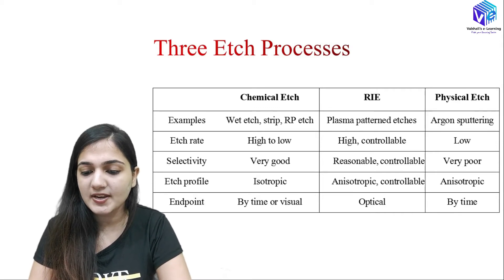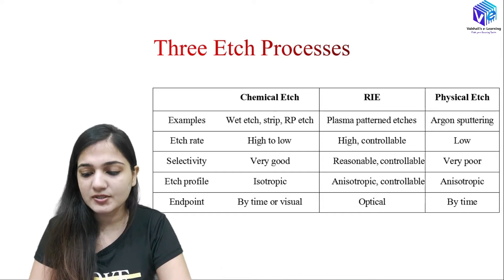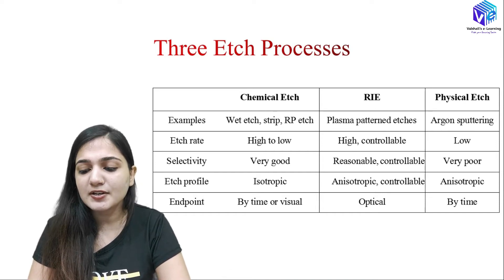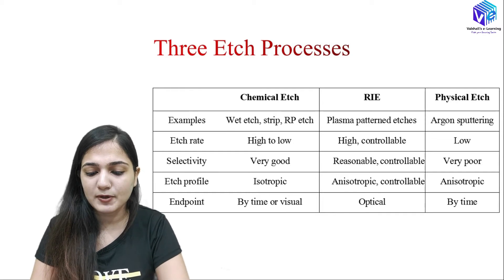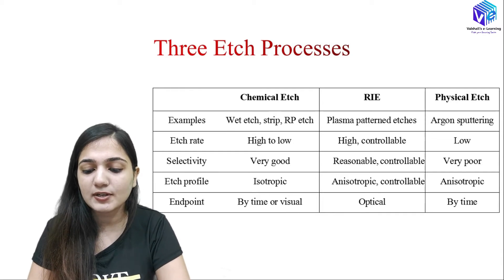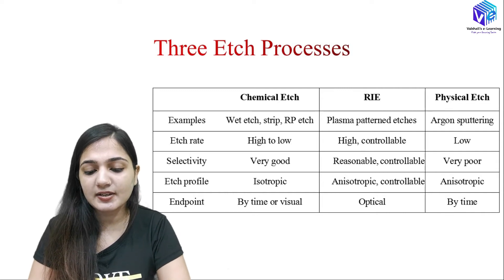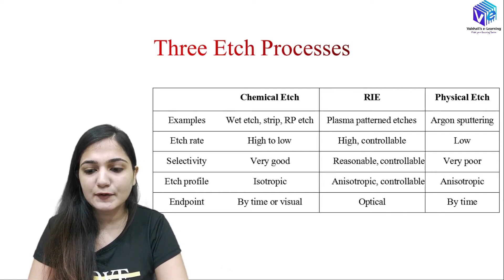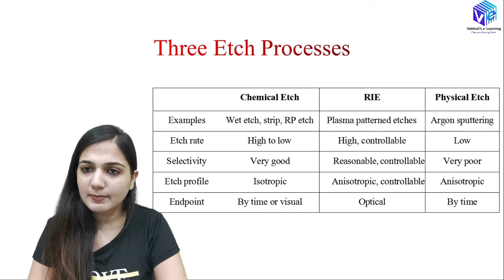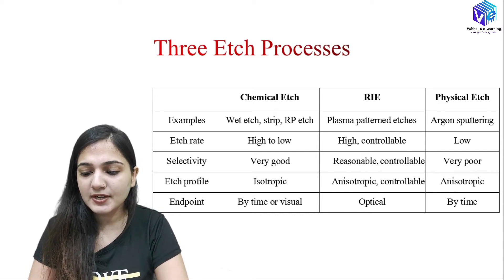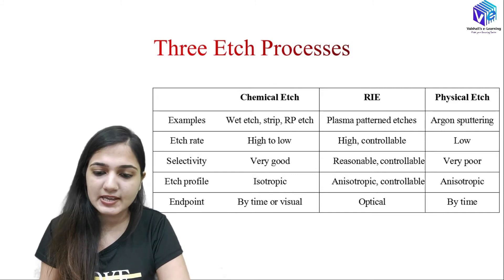The etch profile is isotropic in chemical etching, which is not desired for patterning. In physical etching it is anisotropic, which is required. In RIE it is controllable and can reach anisotropic as well. The end point can be determined by time or visual observation. In chemical etching, time or visual inspection gives the end point. In physical etching, only time can be used. In RIE, optical phenomena can be used, which is highly accurate.